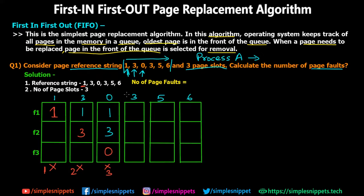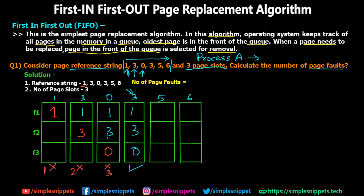Now for the fourth iteration, all three frames are filled with pages 1, 3, and 0. The CPU wants page 3 again. Page 3 is already there in frame two, which means the page table already has an entry for it in main memory, so no page fault is generated. The frames remain as 1, 3, and 0.